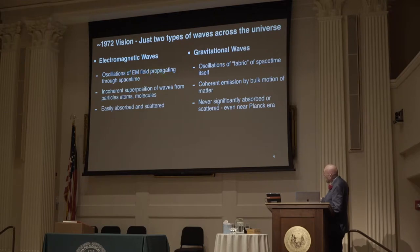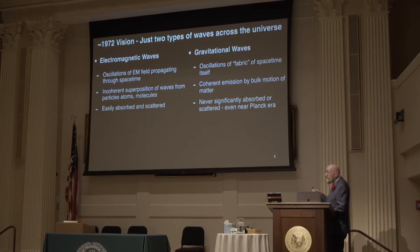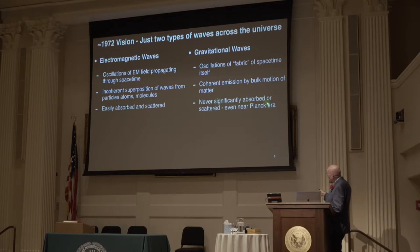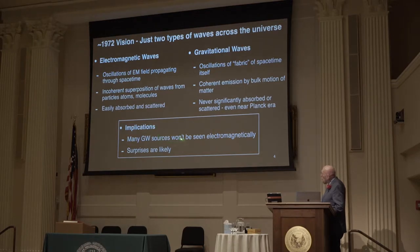By 1972, it was clear there was an enormous contrast between these two types of waves. Electromagnetic waves are oscillations of the electromagnetic field that propagate through space-time, while gravitational waves are oscillations of the fabric or the geometry of space-time itself. Electromagnetic waves are incoherent superpositions of emission from particles, atoms, and molecules, whereas gravitational waves are emitted coherently by the bulk motion of mass and energy. Electromagnetic waves are all too easily absorbed and scattered by matter; gravitational waves are never significantly absorbed or scattered, even near the Planck era. Many gravitational wave sources would never be seen electromagnetically, so huge surprises were likely.